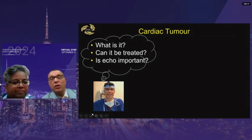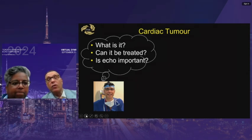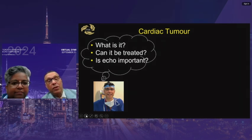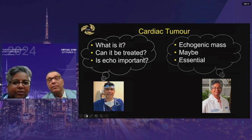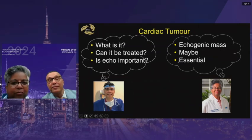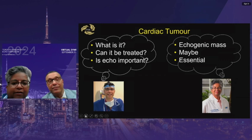When I see a cardiac tumor, the questions are: what is it, can it be treated, and is echo important? The answers are yes — it's an echogenic mass, treatment depends on the case, and echo is essential. The objectives are to demonstrate common and uncommon tumors seen at Toronto General Hospital, describe the workup and principles of treating cardiac tumors, explain why we can resect such large tumors, and describe how echo is important in assessing the cardiac tumor.